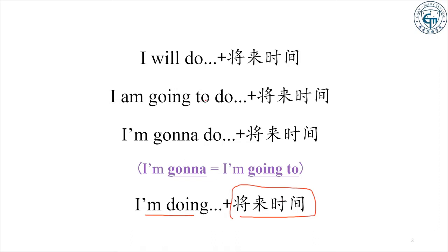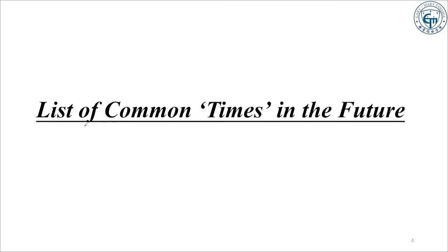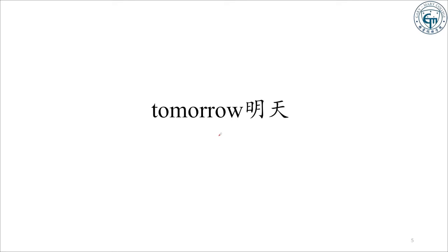好,我们一个一个来用这些表示将来的句型。首先来看跟将来时态一起用的一些常见时间。List of common times in the future. The first one is "tomorrow"(明天)。这个词有三个音节:to-mor-row。注意第一个 O 的发音,tomorrow。